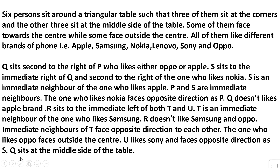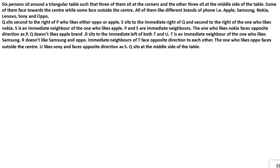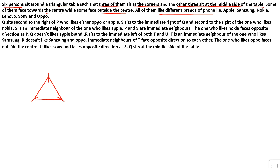So, this is your puzzle. First, you will try yourself and see this approach. Six persons sit around a triangular table, such that three of them sit at the corners and the other three sit at the middle side of the table. Some of them face towards the center, while some face outside the center. All of them like different brands of phones — Apple, Samsung, Nokia, Lenovo, Sony, and OPPO. So let's make a triangle first, with one person at each corner and one at the middle of each side.